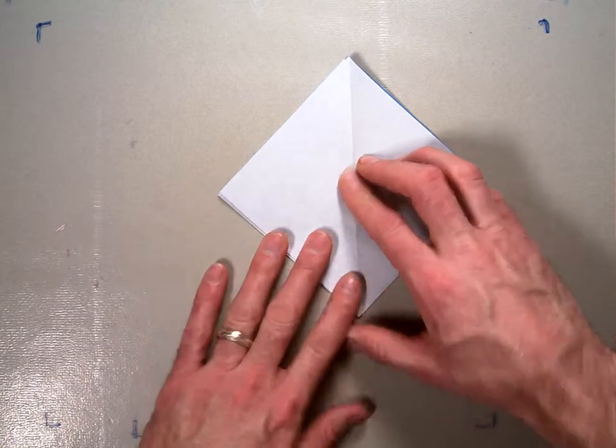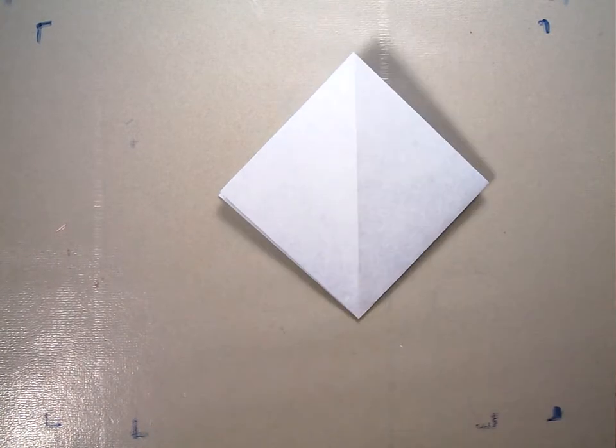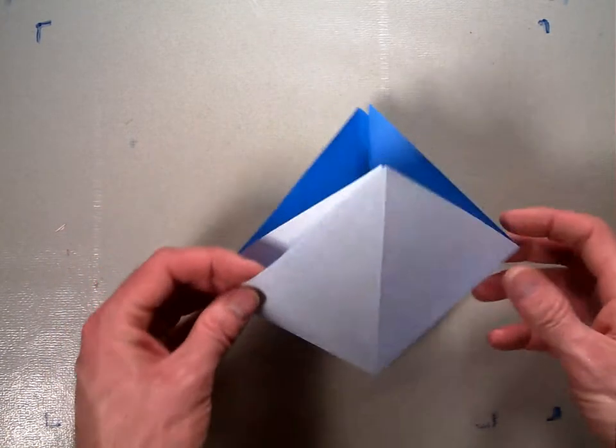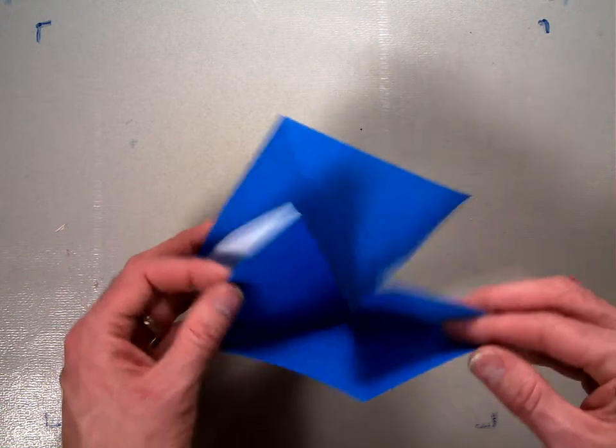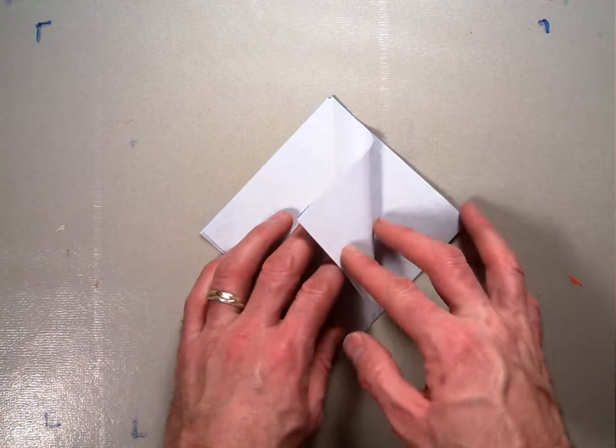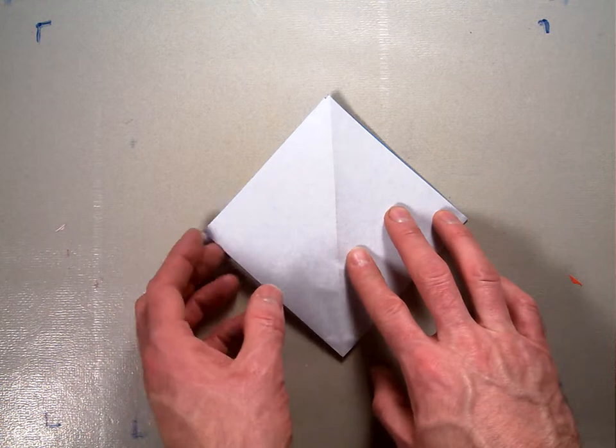If you know a different way to make the preliminary base, by all means, do that. And this is here our preliminary base. It's what it looks like. If you open it up, it's got all those flaps. It should have two flaps on the right side and two flaps on the left side.